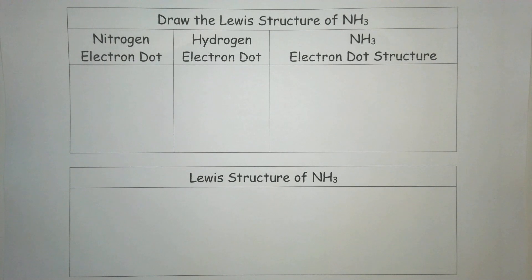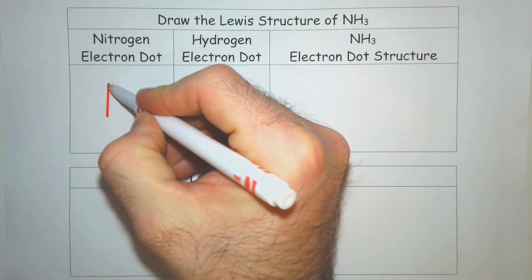In this video, we're going to draw the Lewis structure of NH3 ammonia. I like to first draw the electron dot structures of the atoms in the molecule.